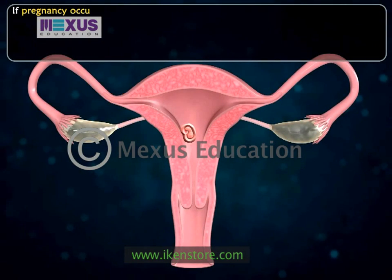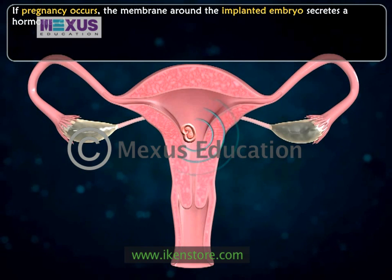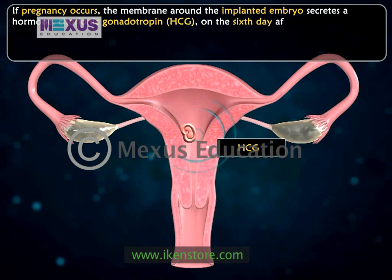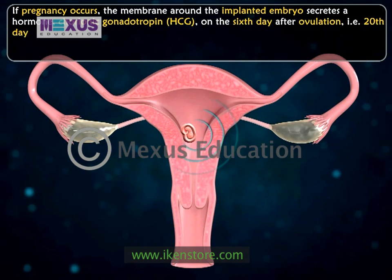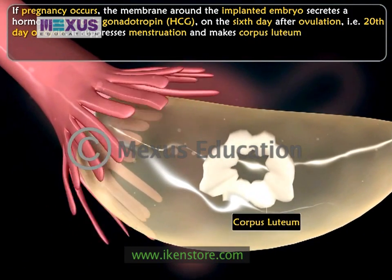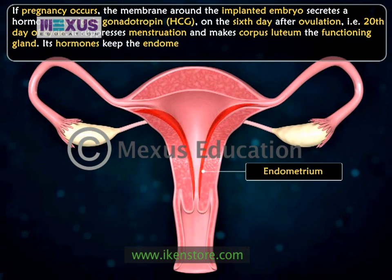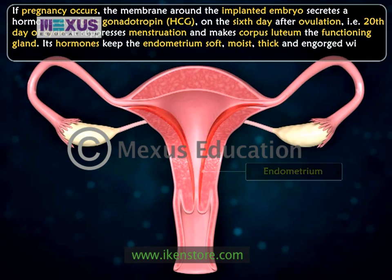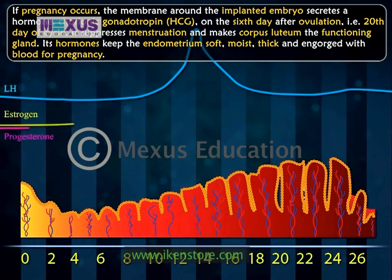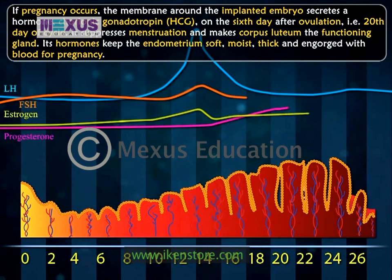If pregnancy occurs, the membrane around the implanted embryo secretes a hormone, human chorionic gonadotropin or HCG, on the sixth day after ovulation, that is, the twentieth day of the cycle. It suppresses menstruation and makes corpus luteum the functioning gland. Its hormones keep the endometrium soft, moist, thick, and engorged with blood for pregnancy. The estrogen and progesterone also inhibit FSH, so no new follicles and eggs mature during pregnancy.